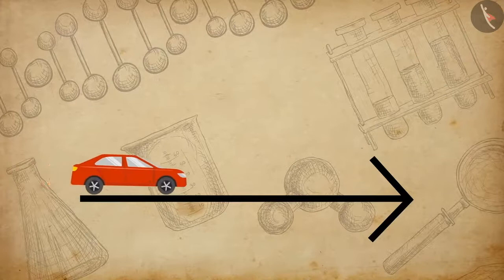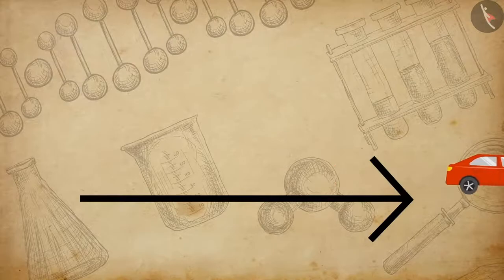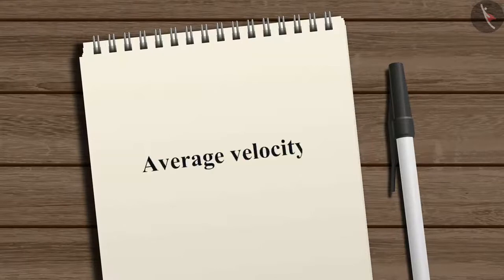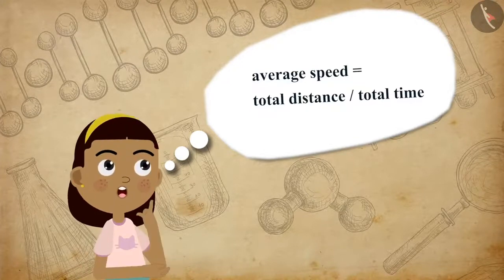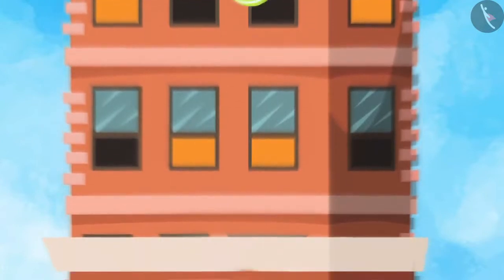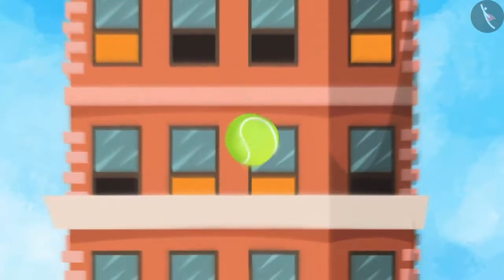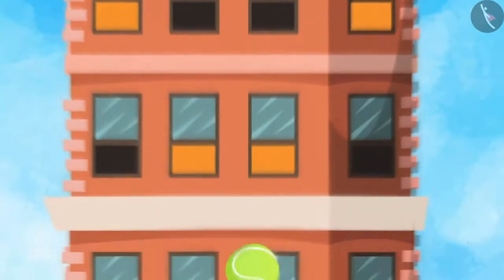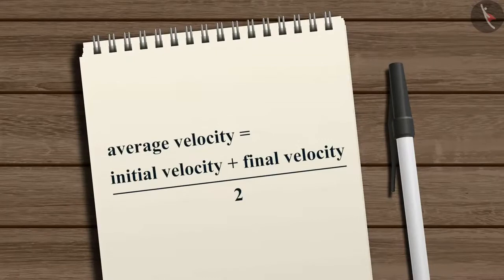The velocity of an object can be changed by changing either its speed, the direction of motion, or both. As we are considering only motion in a straight line, if an object is moving with velocity varying with time, we can express the magnitude of its rate of motion in terms of average velocity, just like the average speed described in the previous video. If the velocity of an object is changing at a uniform rate, we can calculate the average velocity by taking the arithmetic mean of the initial and final velocity for the given time interval.